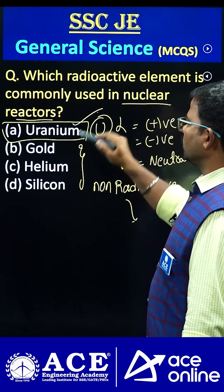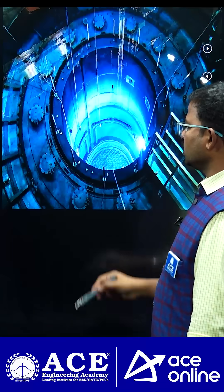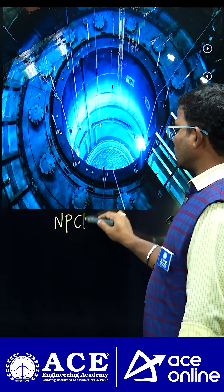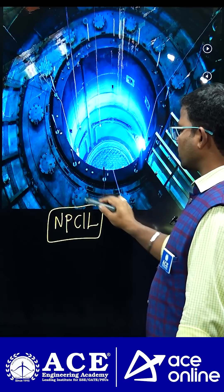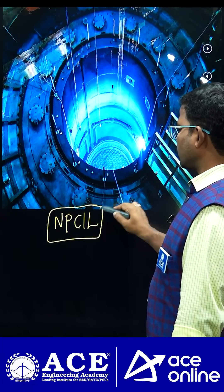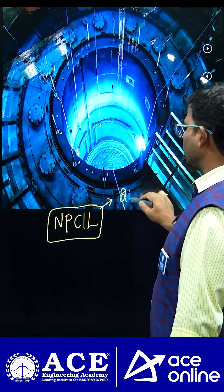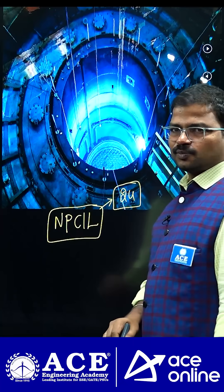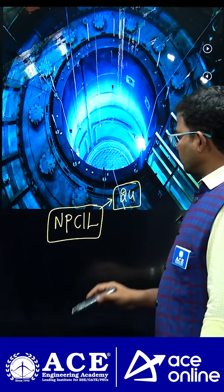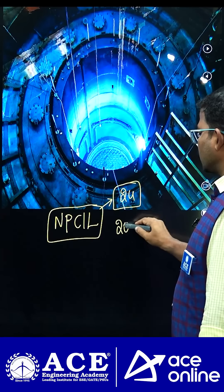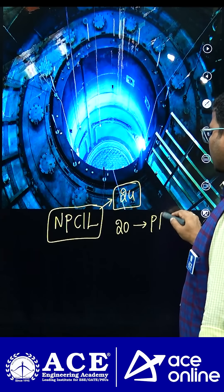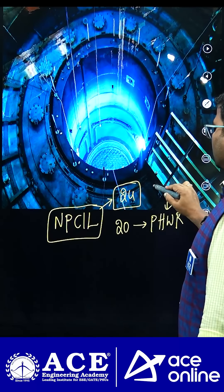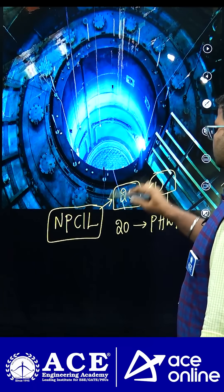Uranium is used in nuclear reactors in India. According to NPCIL — the Nuclear Power Corporation of India Limited — we currently have 24 operational nuclear reactors to produce power. Of those, around 20 nuclear reactors are considered pressurized heavy water reactors.